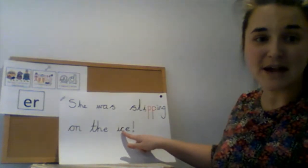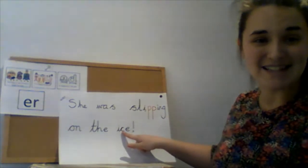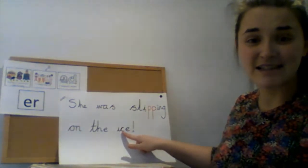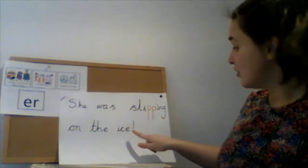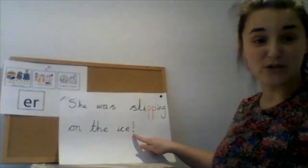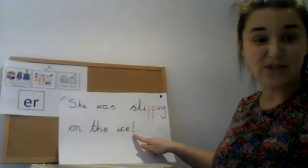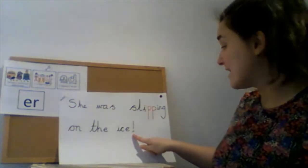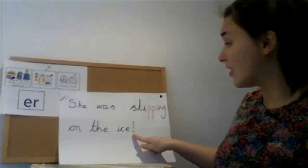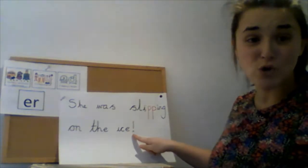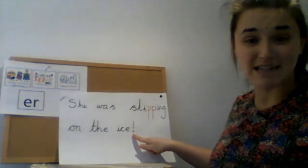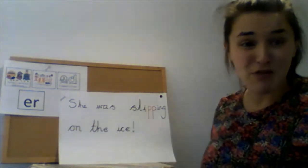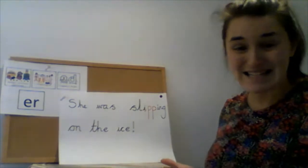She was slipping on the ice. Did you remember that sometimes the C can make a 'sss' sound? Ice. You might have put a full stop and that's fine, but I've chosen to put an exclamation mark because I've added emotion to my sentence. She was slipping on the ice!